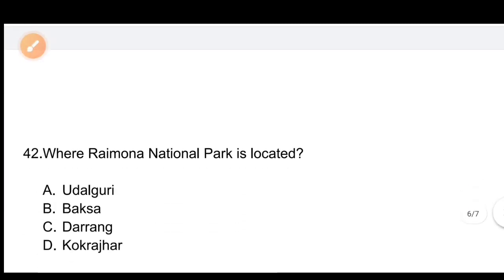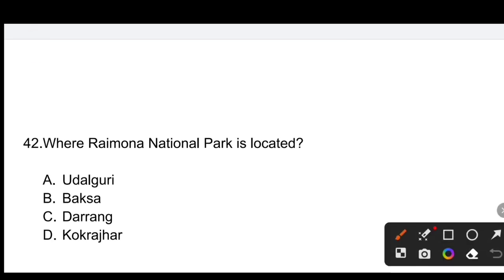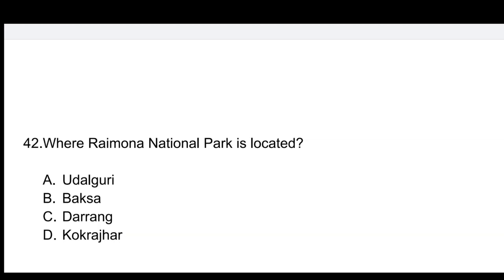Question number 42: Where is Raimona National Park located? Options: A) Udalguri, B) Baksa, C) Sirang, D) Kokrajhar. The correct answer is D, Kokrajhar. Raimona National Park is located in Kokrajhar.